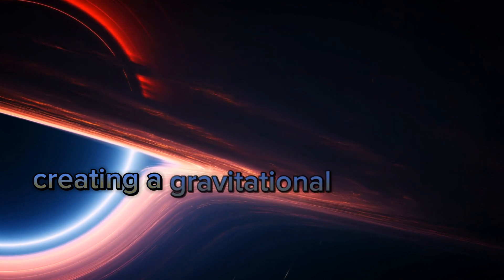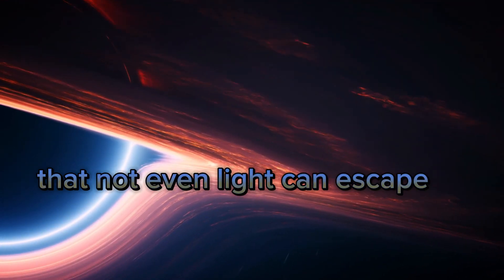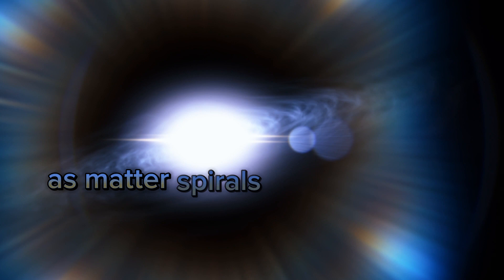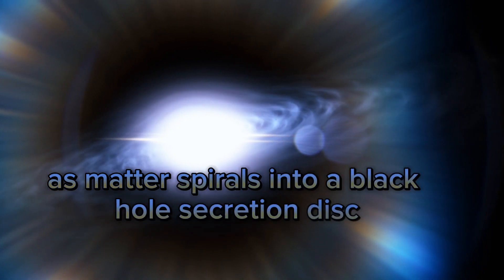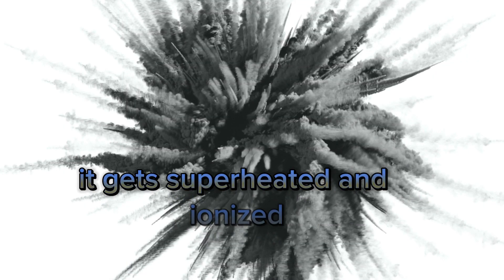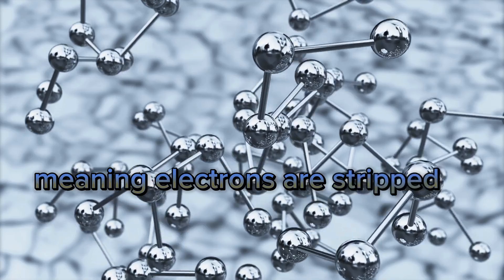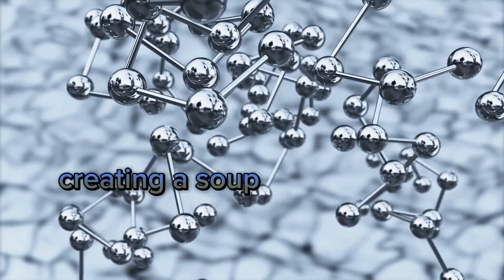As matter spirals into a black hole's accretion disk, it gets superheated and ionized, meaning electrons are stripped away from their atoms, creating a soup of charged particles.